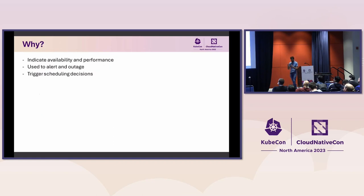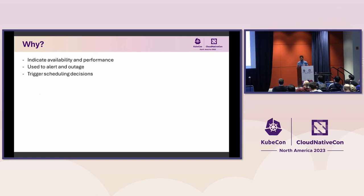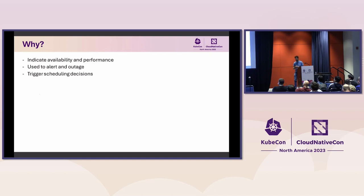Why do we need metrics? By using metrics we are able to understand if our service is available and what its performance is. Many of you probably get alerts when a metric changes on the system or when there is an outage. We can configure those rules to understand when there is an issue with our system.